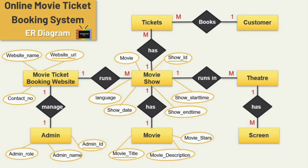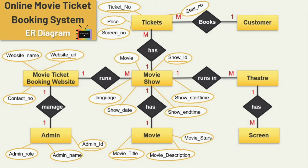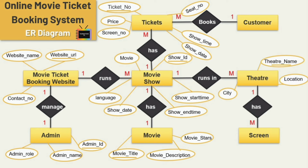For the tickets entity, the first attribute is ticket number, which is the key attribute; second is price; next are screen number, seat number, show time, and date. For the theater entity, I am adding three attributes: theater name, location, and city — and theater name is the key attribute.